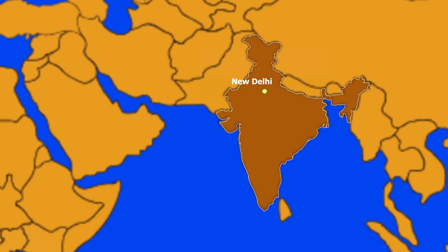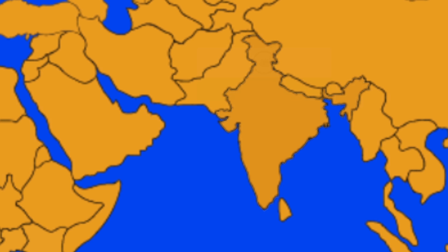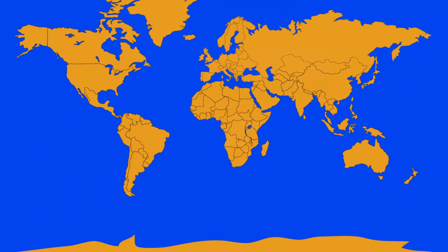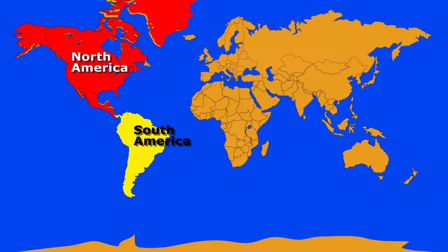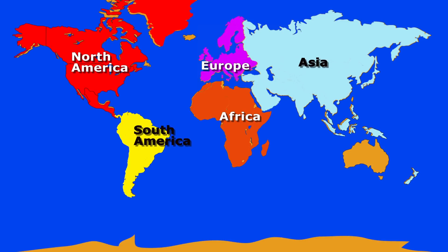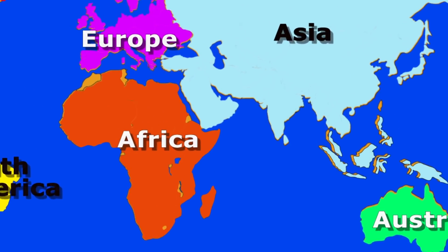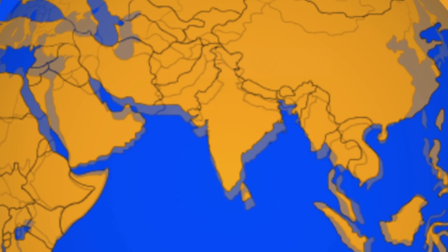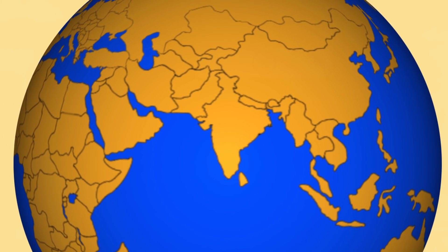Coming back to India, the capital of India is New Delhi. The world is made up of seven continents: North America, South America, Africa, Europe, Asia, Australia, and Antarctica. India lies in the Asian continent — it lies in the south of Central Asia.